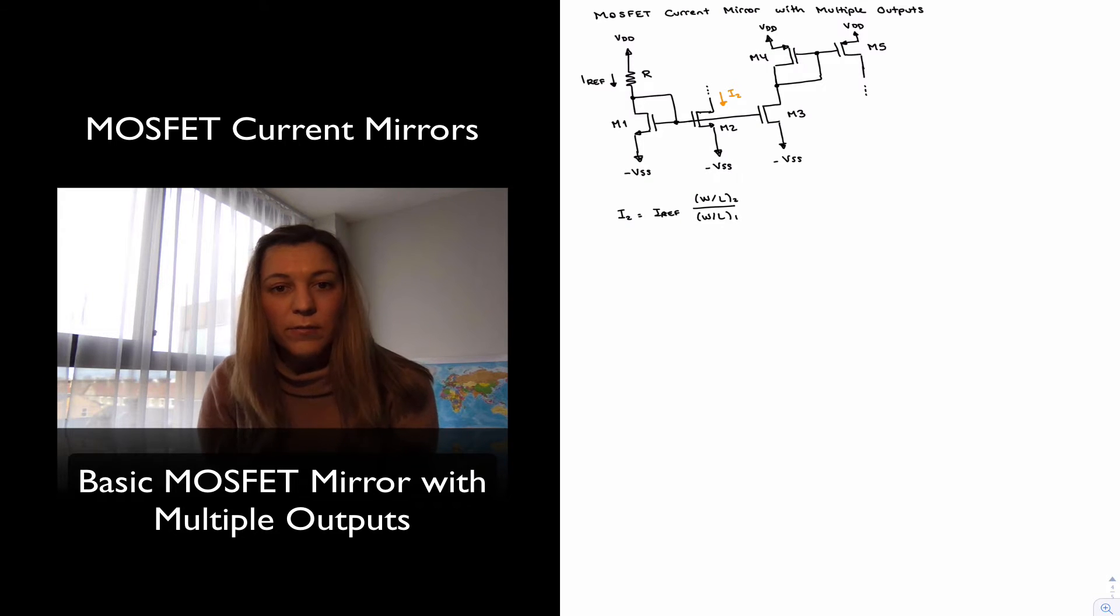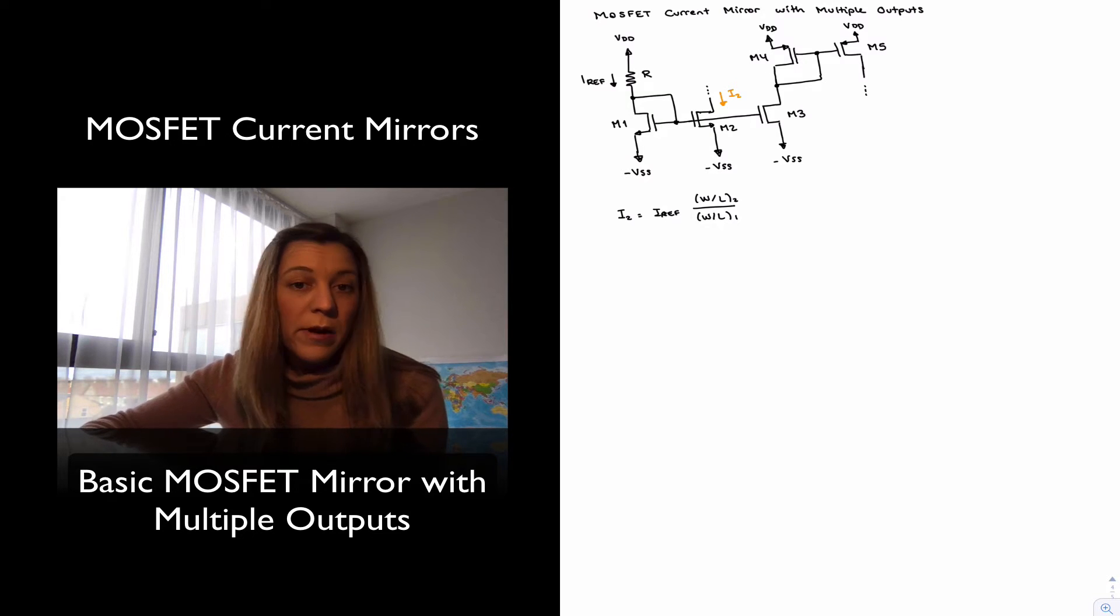So for transistors of the same size there will be the exact same current I ref flowing through both of them. And now some section of my circuit could be connected to the drain of I2 and will be biased by I2.